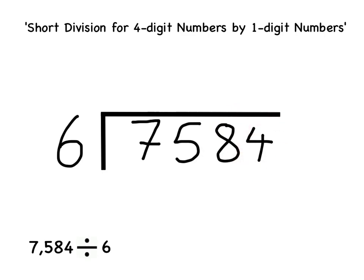The first division is how many 6's are in 7. I know there is one 6 in 7, so I write the 1 here. However, there is a remainder of 1 which must be written here next to the 5.